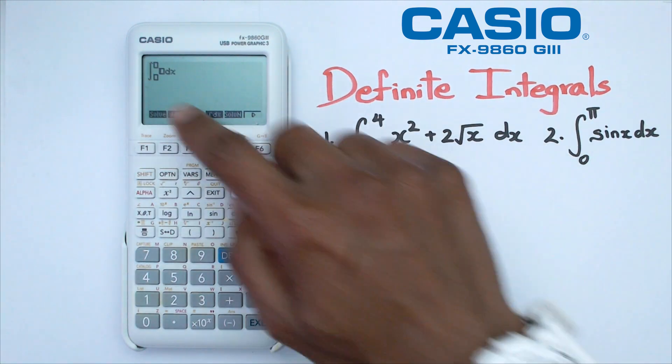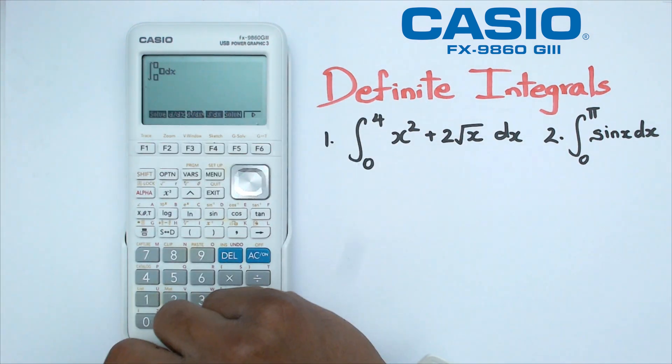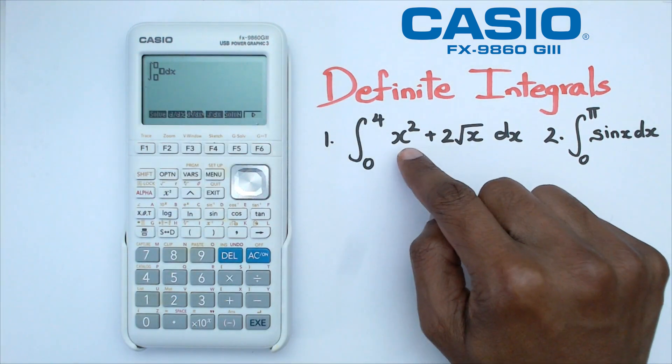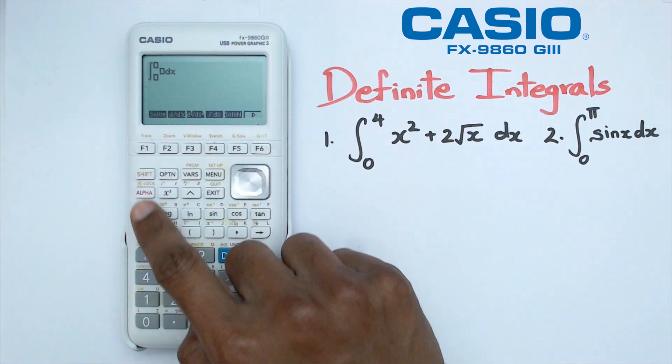These two numbers are the upper and lower bounds, and you write the function inside the middle box. For the x variable, don't use alpha x—always use the x button underneath the alpha button.